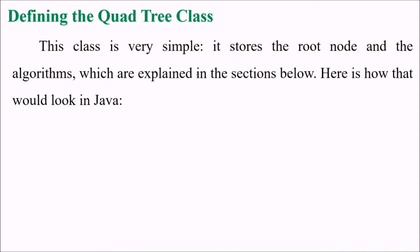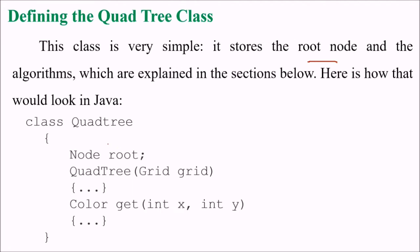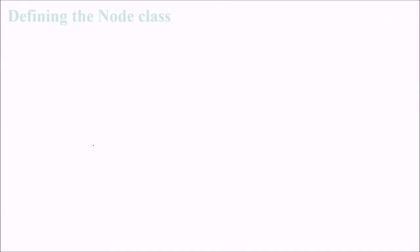The quad tree class is quite simple — it stores the root node and the algorithms we are going to discuss. In Java or a similar language, the class for the tree has a node called root, a quad tree constructor, and a color get function since we are dealing with color images.